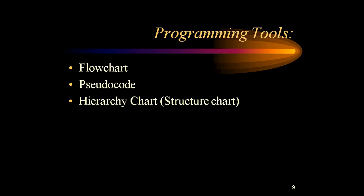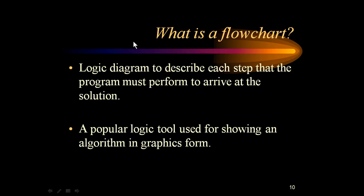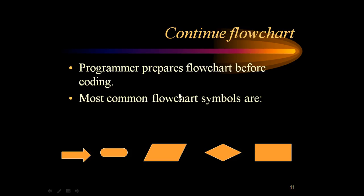What programming tools are available? Eminent people in computer science have developed these over time: flowcharts, pseudocode, structure charts, and UML, which people are using immensely. Let's start with the flowchart — a logic diagram describing each step the program performs to arrive at the solution. Most bugs and problems are found here. It is a popular logic tool for showing an algorithm in graphical form.